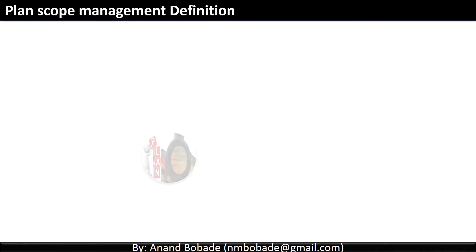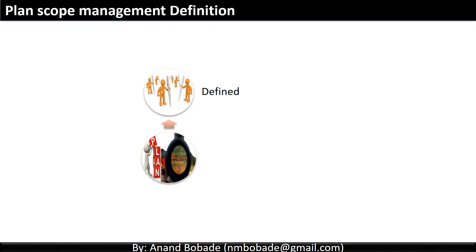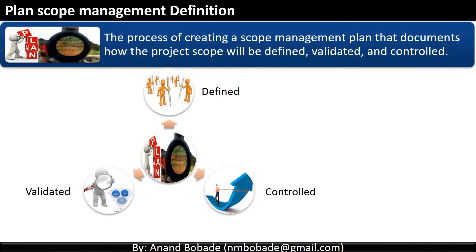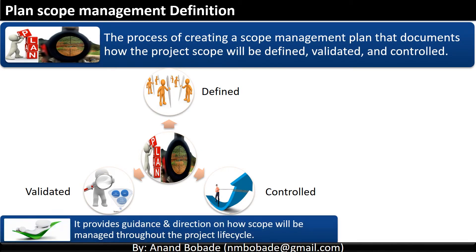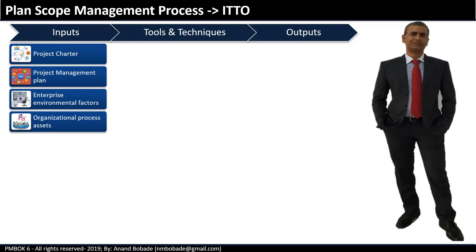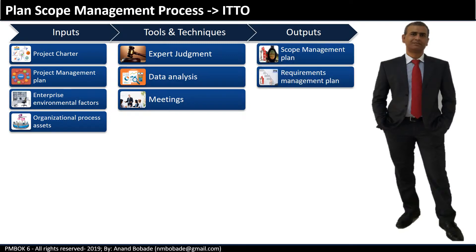Let's take a look at the definition. Plan scope management is the process of creating a scope management plan that documents how the project scope will be defined, validated and controlled. It provides guidance and direction on how scope will be managed throughout the project lifecycle. Let's take a look at the inputs, tools and techniques, and outputs.